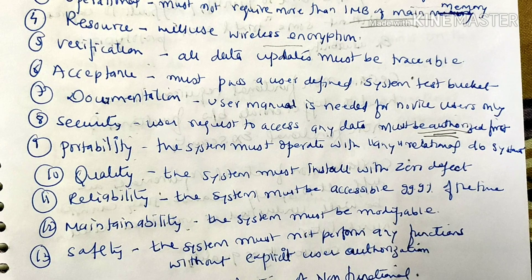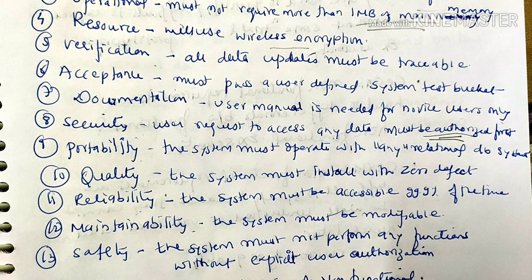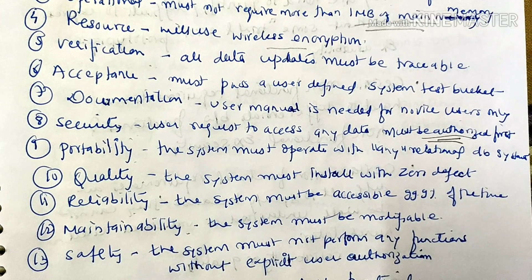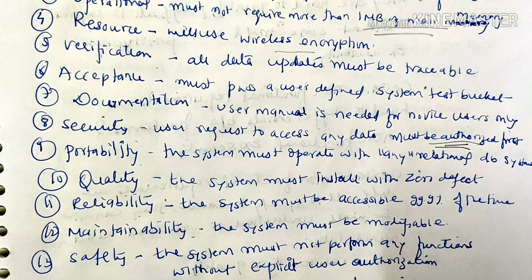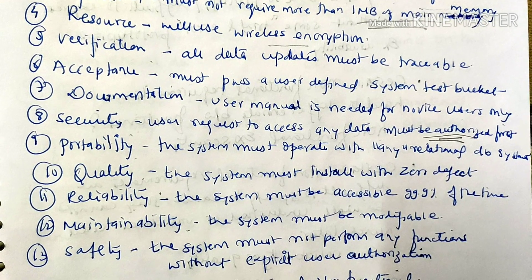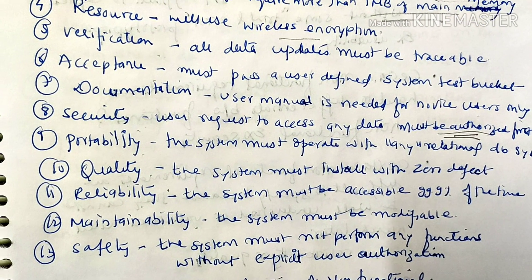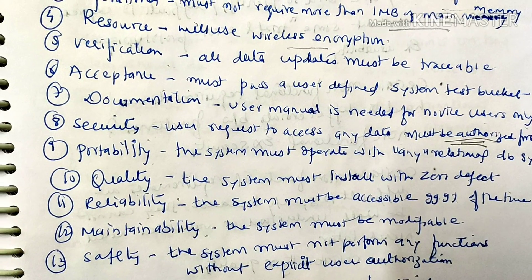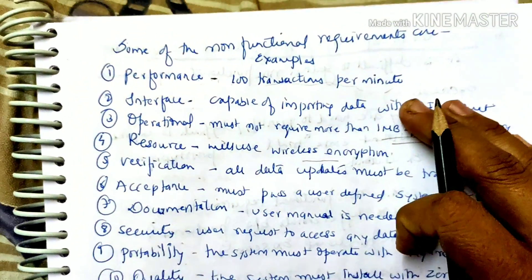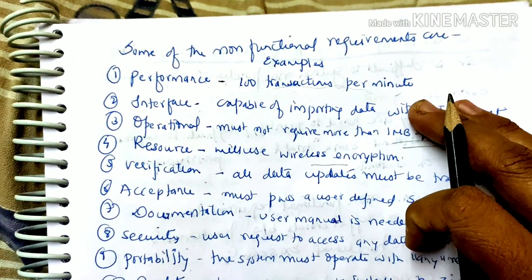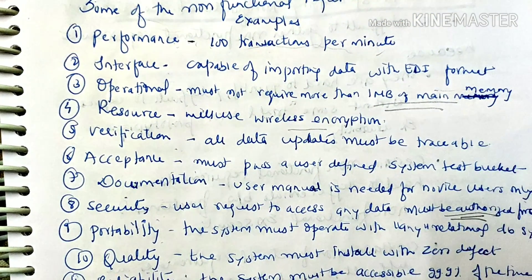Reliability means the system should be available and accessible for maximum time — it should not stop. Maintainability means we should be able to modify the system at any time. Safety means no action should happen without user authorization, and it defines which resources will be used. These are implicit constraints — these are non-functional requirements.